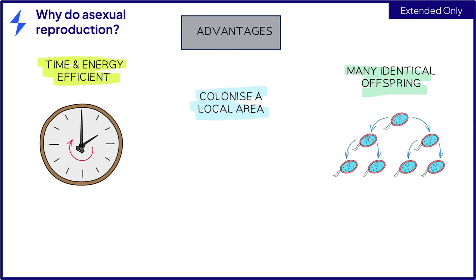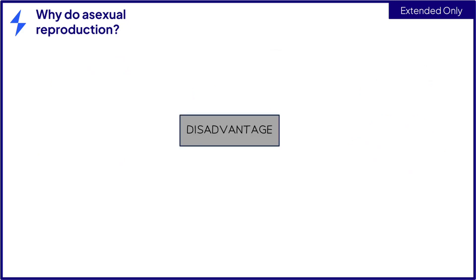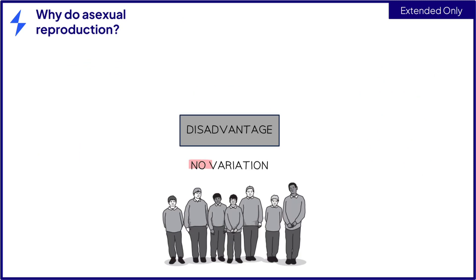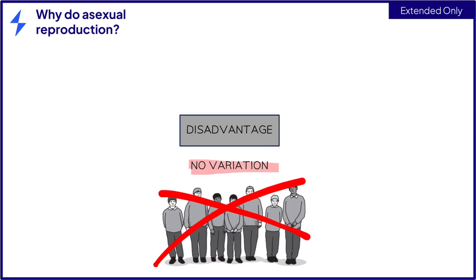This however can be a disadvantage, as the population has no variation within its genetic information. So if individuals are affected by disease or mutation in their DNA, it is likely to affect the whole population, which could be catastrophic to the species.